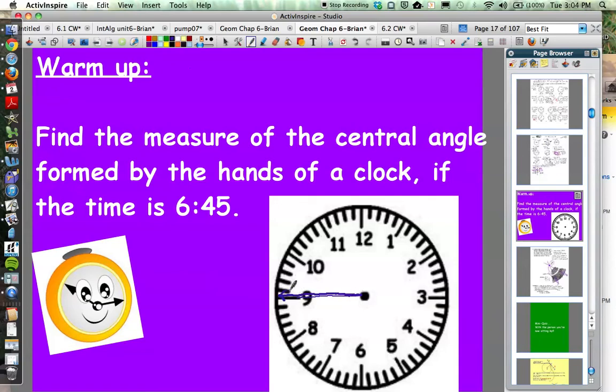And then the hour hand, the shorter hand, is going to be not pointing at the 6, right? Because between 6 and 7 o'clock the hour hand moves, just like the minute hand moves. So the shorter hand is pointing maybe something like that. It's closer to the 7 than the 6.